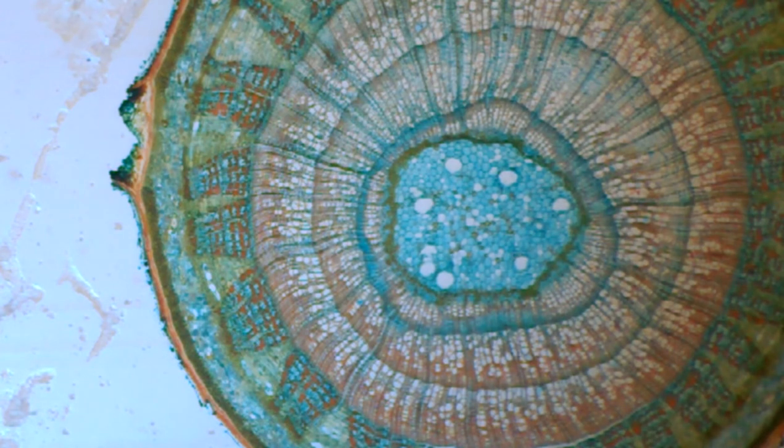And you can see the bark on the outside. Inside the bark is a little thin green layer of the cambium. And then you can see the growth rings and the phloem and the xylem.